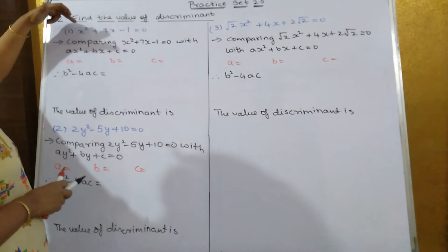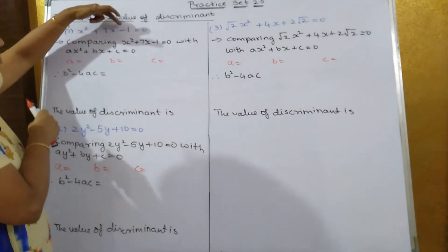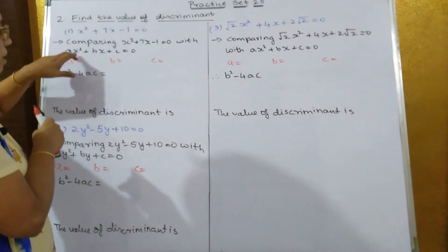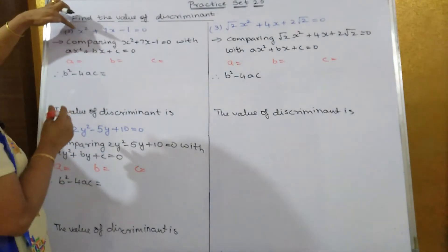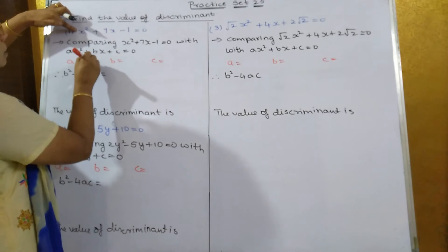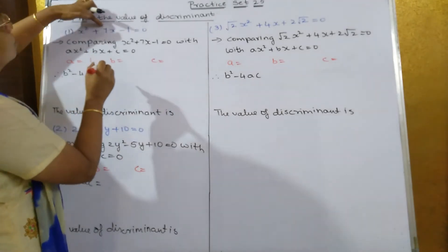So when you compare x² + 7x - 1 = 0 with ax² + bx + c = 0, what do you get? The value of a: a is equal to 1. What is b? b is equal to 7.